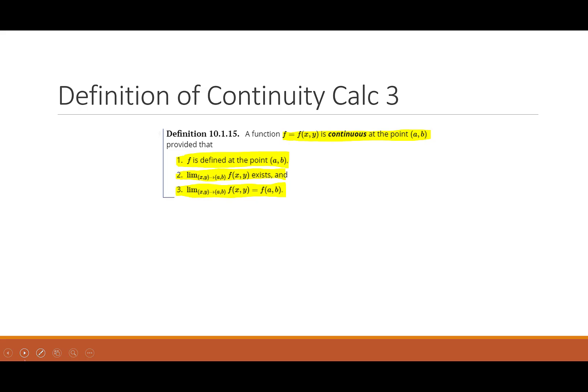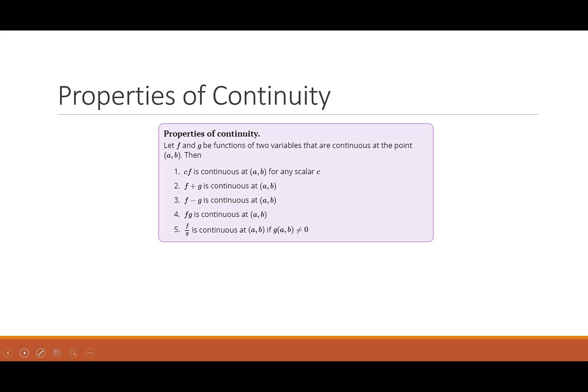So let's talk about some properties. We still have very nice properties of continuous functions that we had back in Calc 1. So let f and g be two continuous functions. Then: if you multiply f by a scalar, you're still continuous; if you add or subtract your functions, you're still continuous; if you multiply your functions, you're still continuous; and if you divide your functions, you're continuous provided you don't divide by zero.